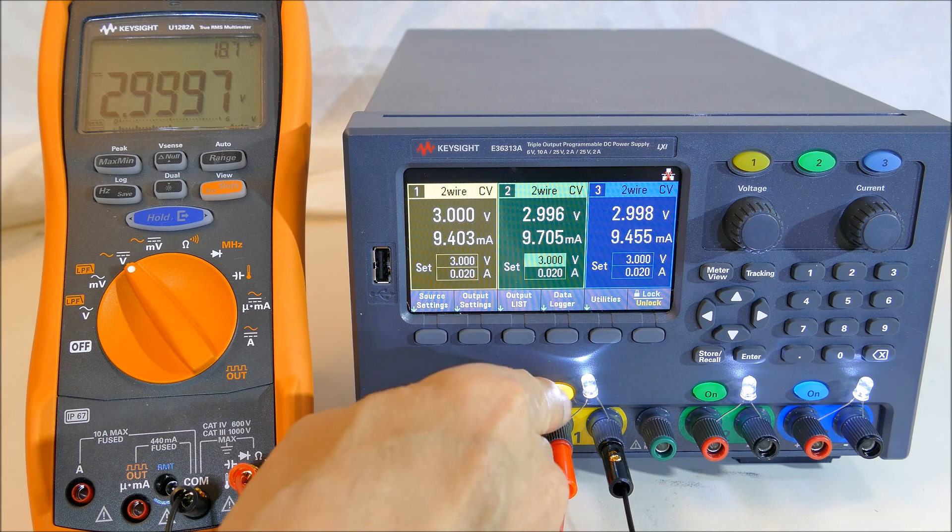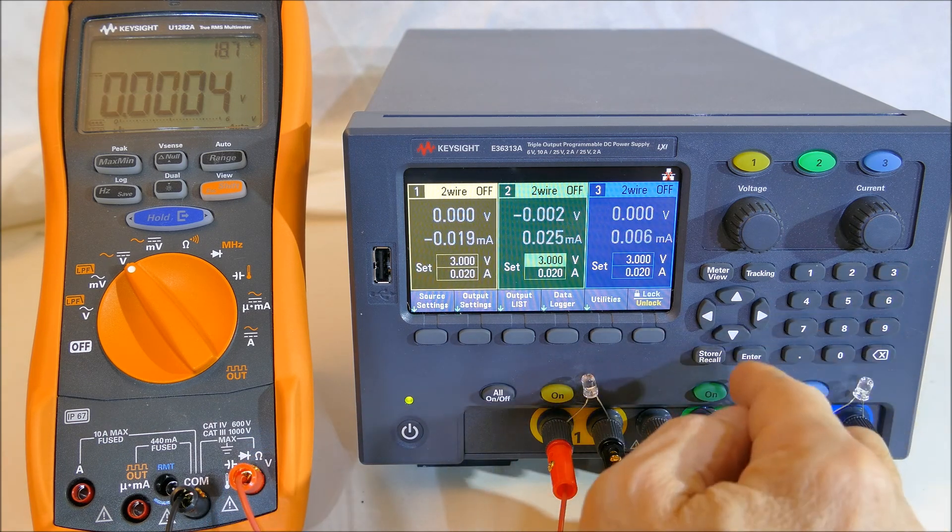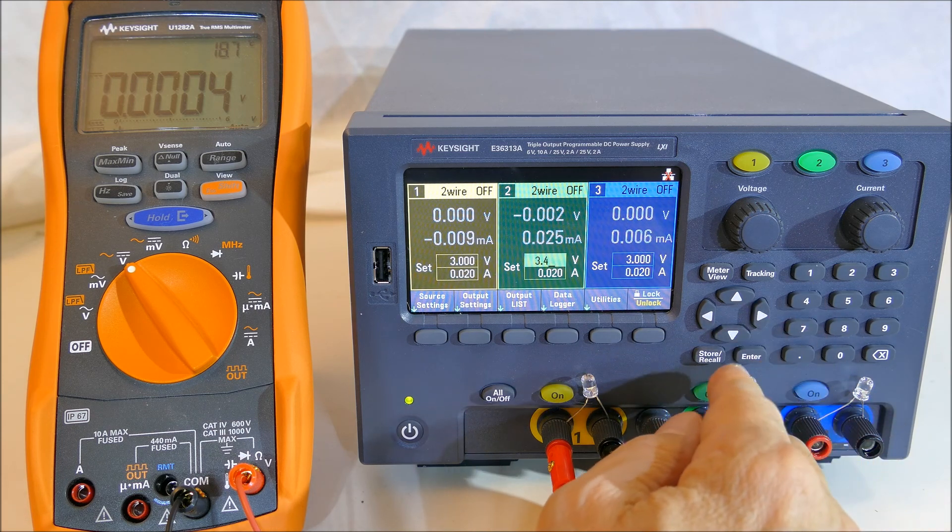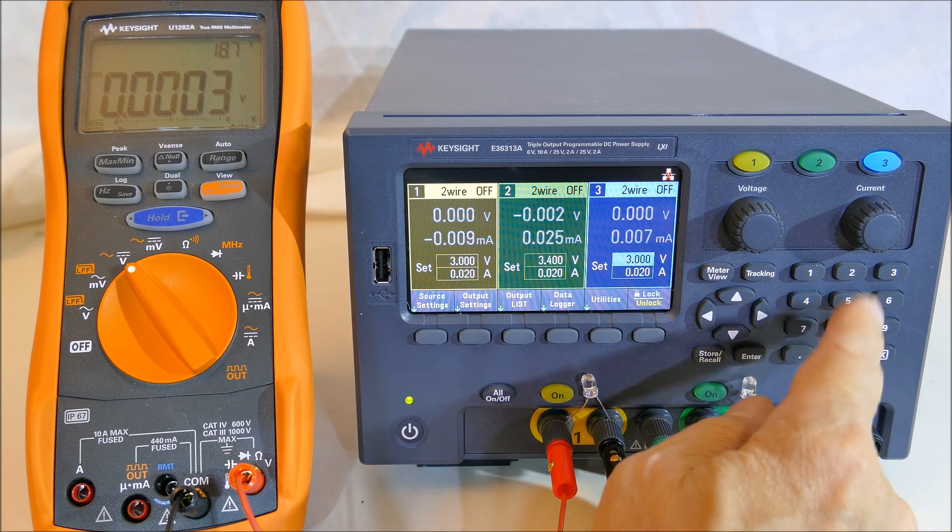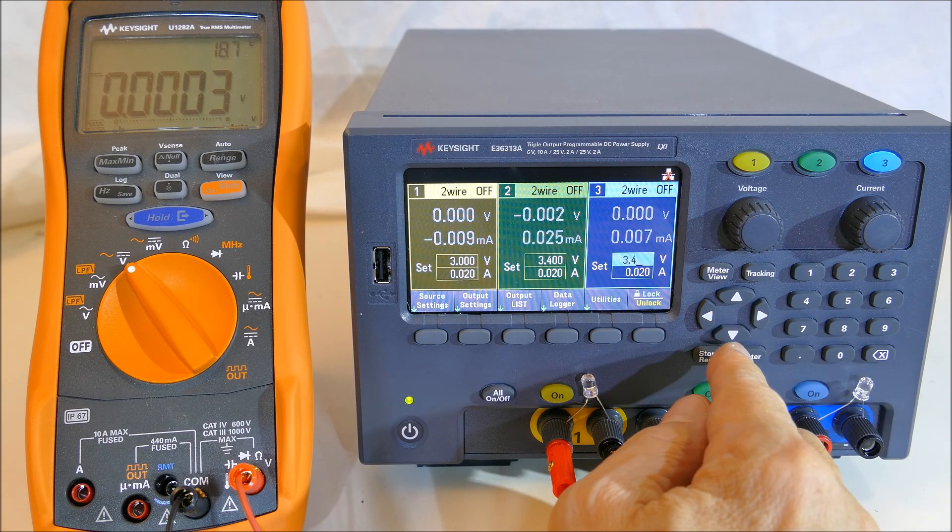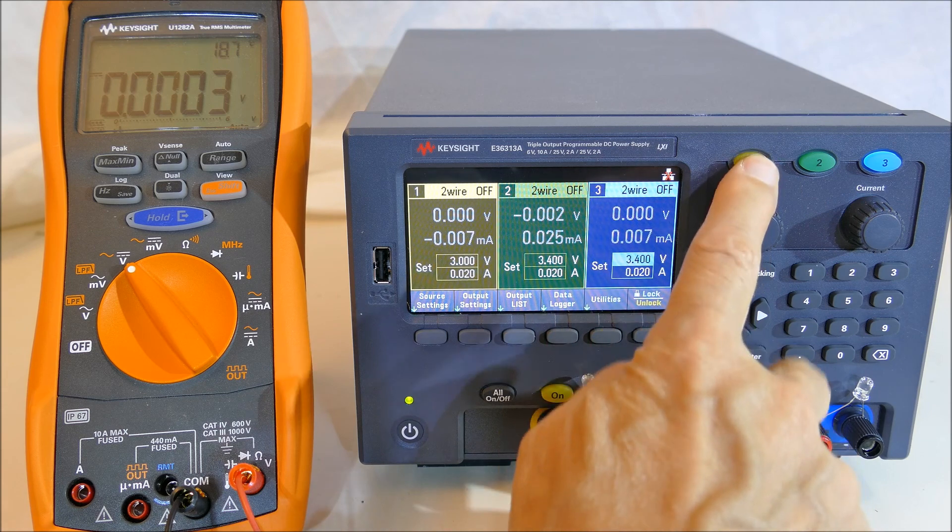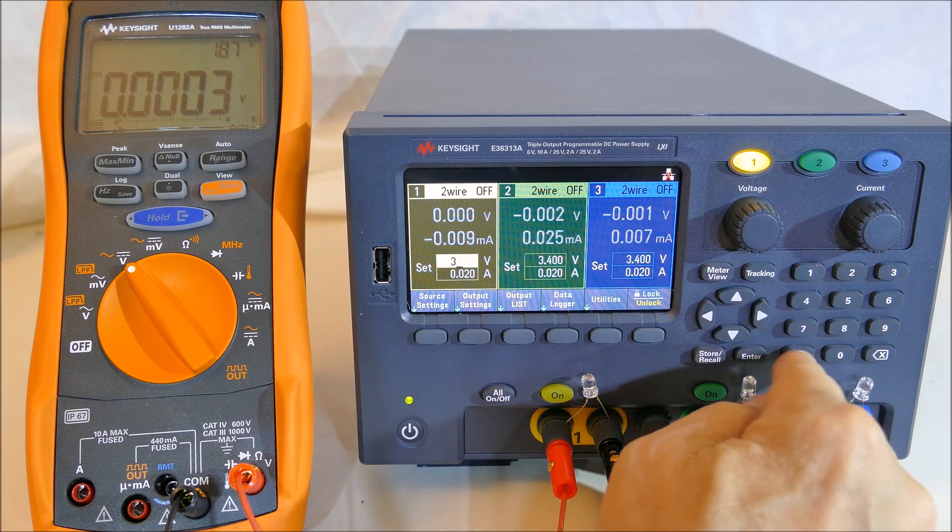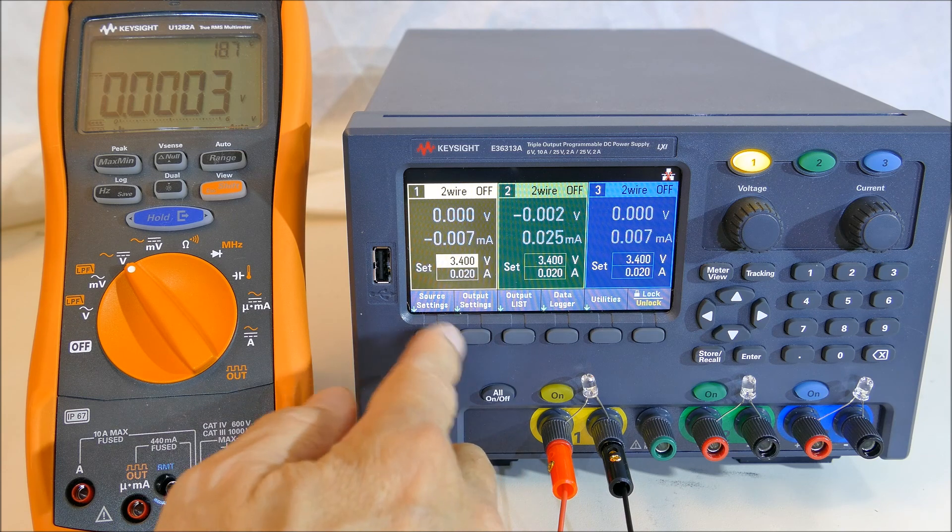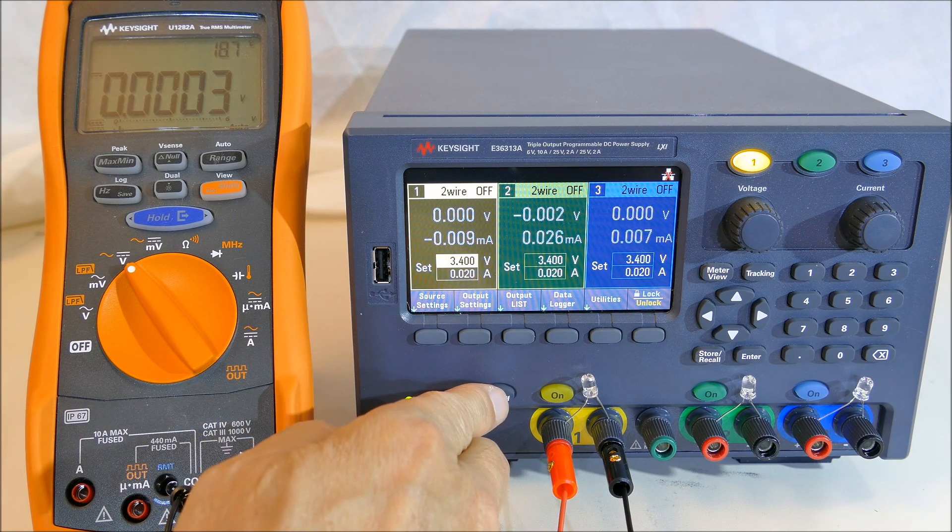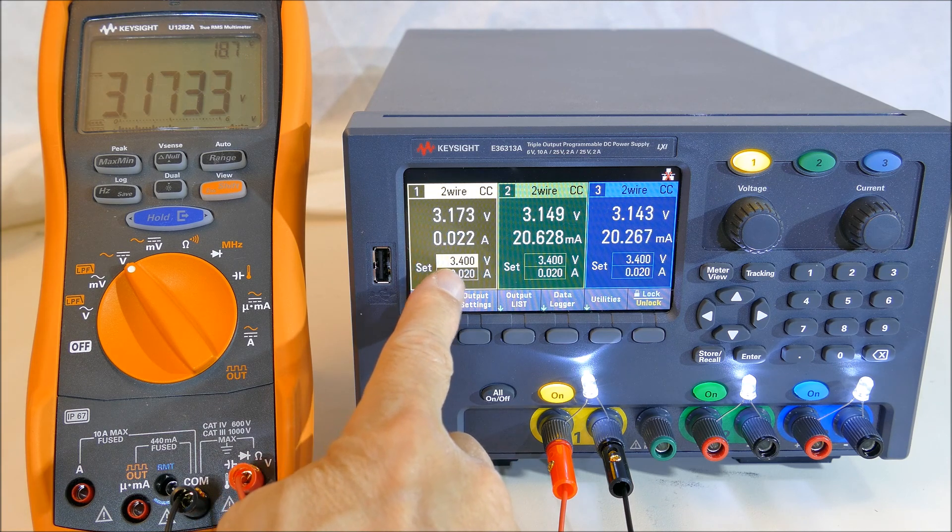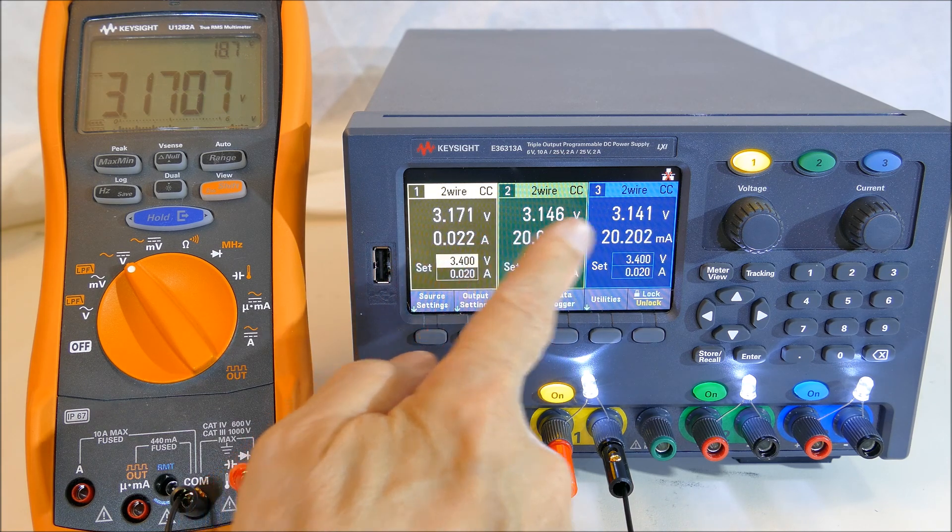So if I increase the voltage to say 3.4, I'm going to do it to all of them. When I turn this on, they should go into current limit at 20 milliamps. It's not reaching 3.4 volts, it's only 3.1 volts.